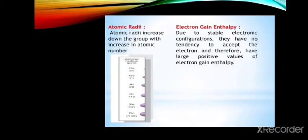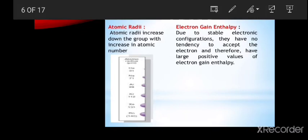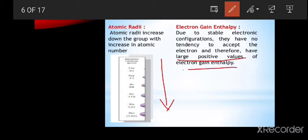Atomic radii increase down the group as atomic number also increases. Regarding electron gain enthalpy, these elements do not have any tendency to accept electrons. Therefore, they have large positive values of electron gain enthalpies due to their stable electronic configuration.